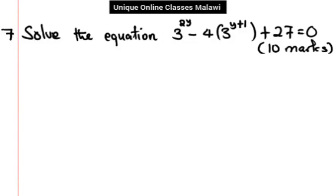Let's see the solution of this question, Paper 2 Manual Question 2023. We need to solve 3 to the power 2y minus 4 bracket 3 to the power y plus 1 equals bracket plus 27, with 10 marks.